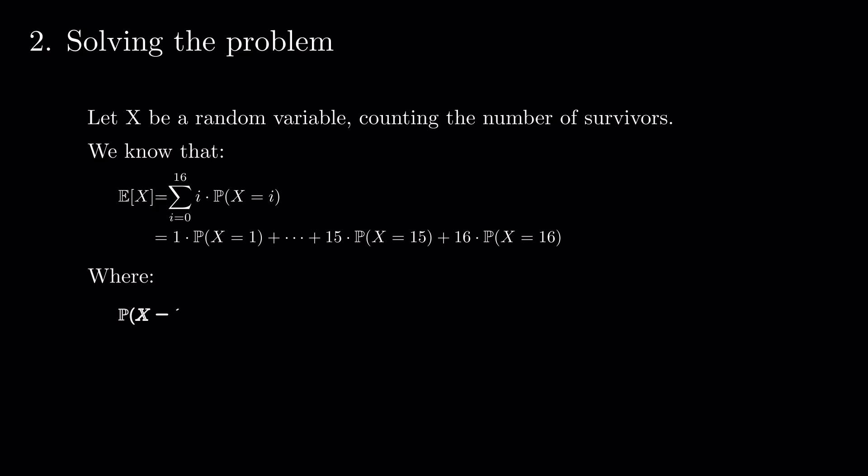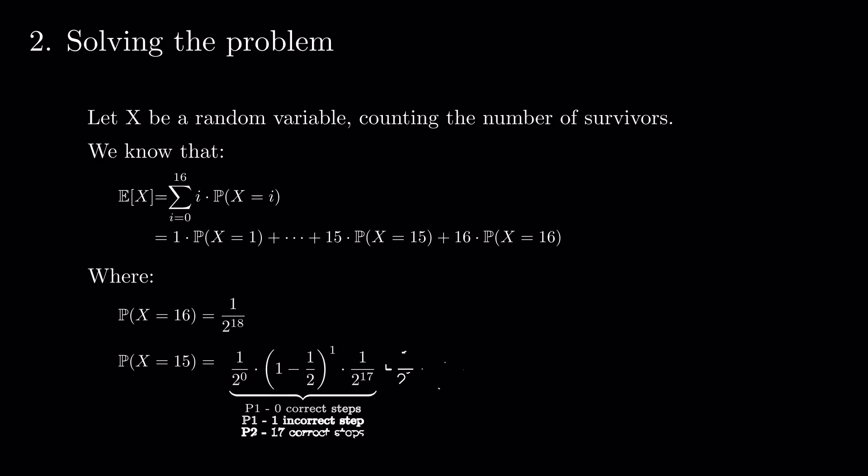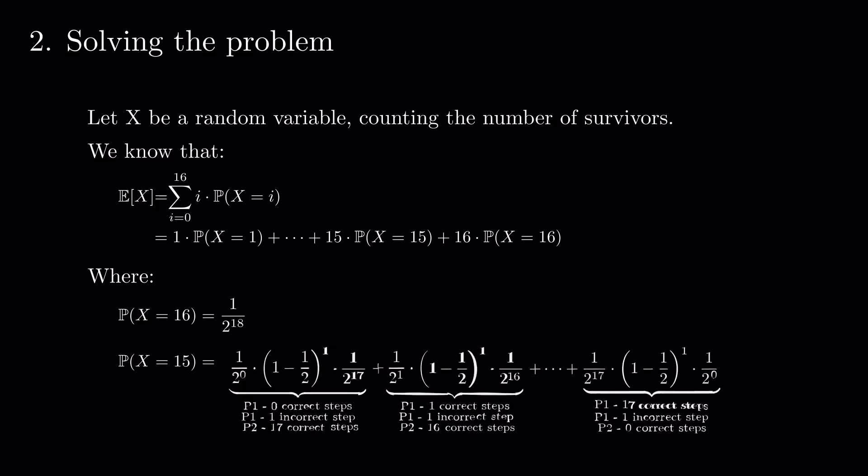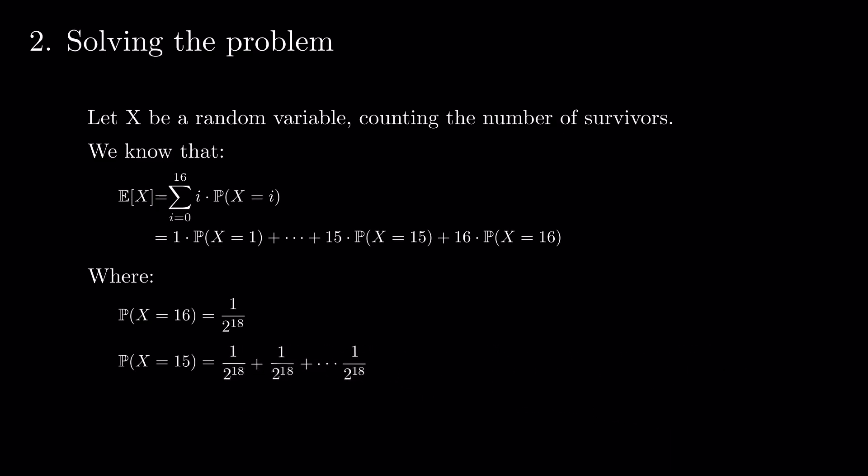From the previous analysis, we know that the probability of X equals 16 is 1 divided by 2 to the power 18 and the probability of X equals 15 is sum of the probability that the first player is eliminated over all possible places where this happens. Each term is 1 divided by 2 to the power 18 and we have 18 possible choices for that tile. Formally, think that the value 18 is 18 choose 1.